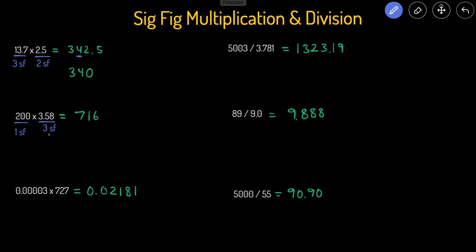3.58 has three sig figs. One is less than three, that means our final answer will just have one sig fig.